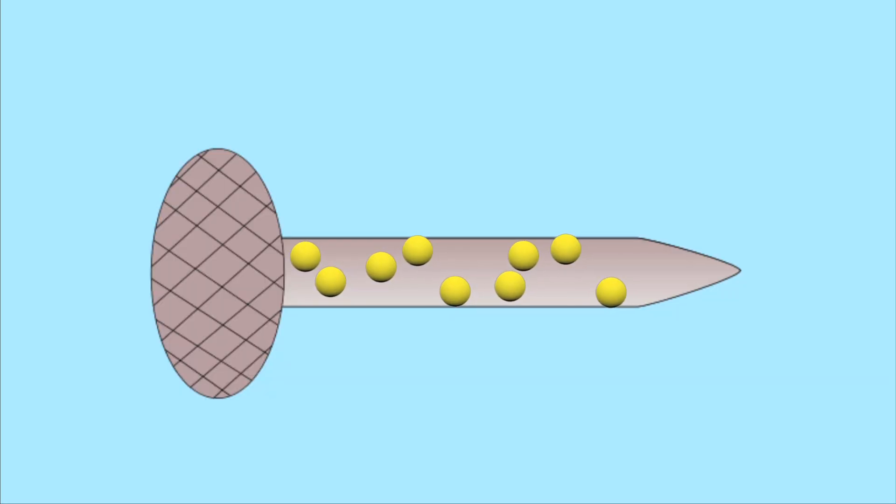Before a current was introduced to the nail, all the atoms in the nail were randomly arranged. The current from the battery created the magnetic field around the wire and caused the atoms in the nail to align in the same direction.